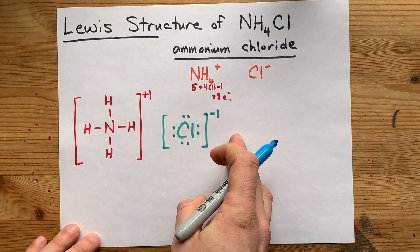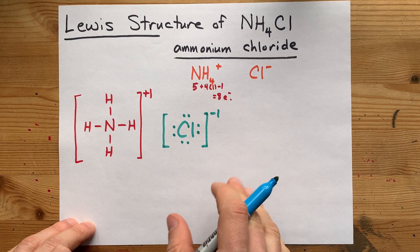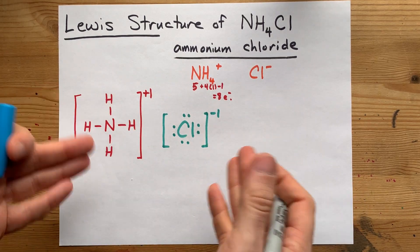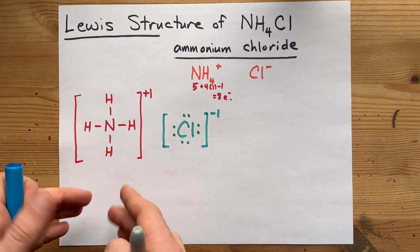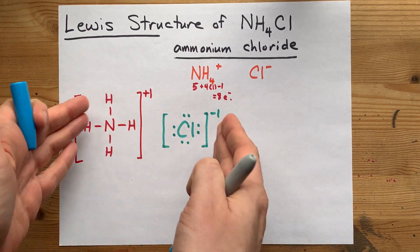This is your Lewis structure for ammonium chloride. It's a combination of the Lewis structures of the ammonium ion and the chloride ion separately.